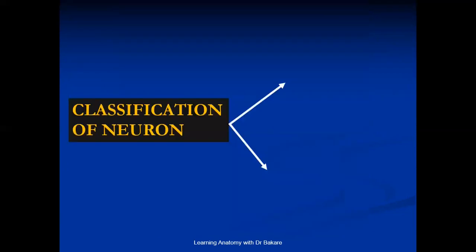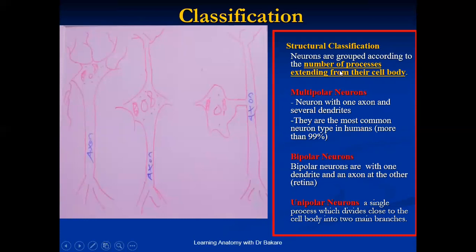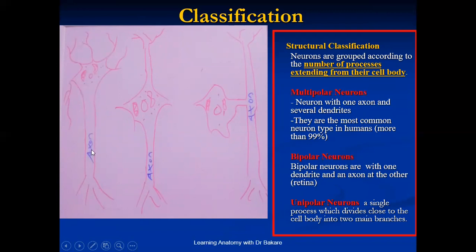Classification of neurons. We can classify neurons based on what they look like — their morphology — or in terms of what they do, that is their function. Morphological classification is based on the number of processes that extend from the cell body. The number of extensions seen around the cell body determines the structural classification of neurons. A multipolar neuron has numerous extensions from the cell body — you can see the somatic dendrites and the axon — and this configuration is seen in about 99% of neurons, making it the most common type.